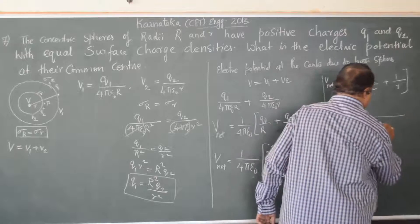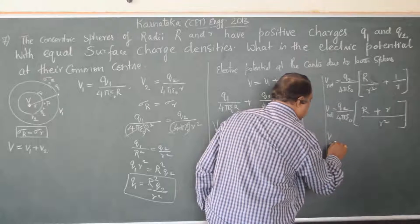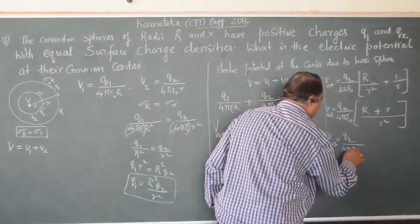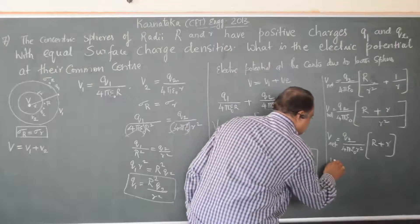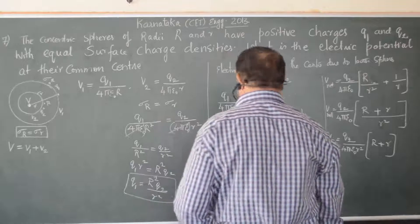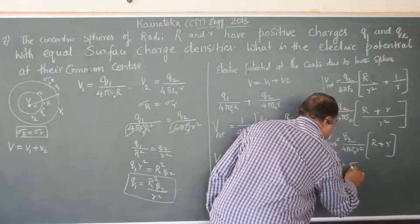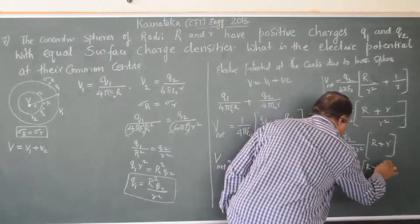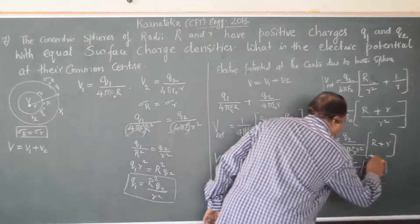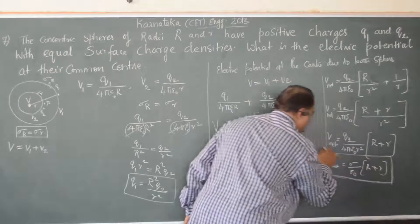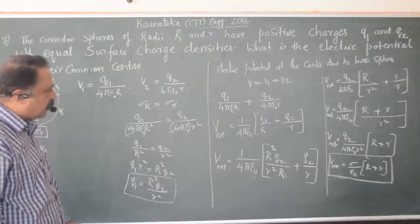Taking r² as the LCM inside the bracket gives V_net equals Q2 divided by 4πε₀r² times the quantity R plus r. Now, Q2 divided by 4πr² is sigma divided by ε₀, so V_net equals sigma divided by ε₀ times the quantity R plus r. This is the net electric potential at the common center of the two spheres.